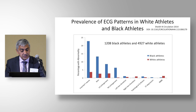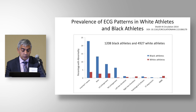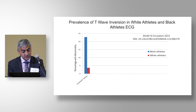Looking at a larger dataset of 1,200 black athletes and nearly 5,000 white athletes, black athletes differ from white athletes in several respects. Focusing on T-wave inversion specifically, the prevalence of T-wave inversion in black athletes is 25%.